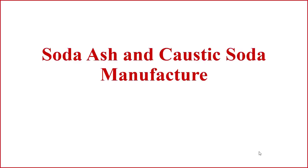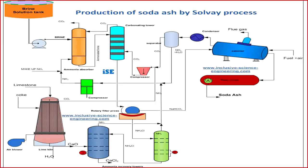Today we will see the manufacturing of soda ash and caustic soda. We will see the manufacturing process of soda ash first and later caustic soda. Both chemicals are very commonly used in industry, whether as reagents, chemicals, or cleaning agents. Soda ash, which is sodium carbonate, is formed by a process known as the Solvay process.